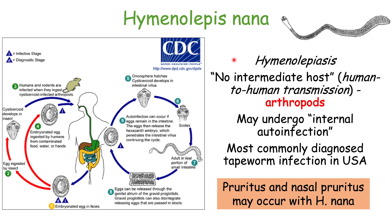In addition to the general signs and symptoms, Hymenolepis nana infections can lead to pruritus — an itching sensation — as well as rash. There can also be nasopruritus with these types of infections, so patients can have an itchy or runny nose, and sneezing can also occur.